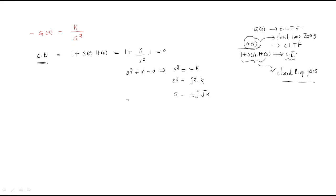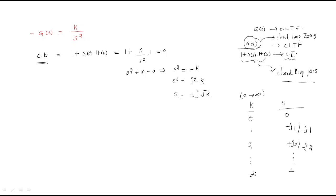Using these values we draw the root locus. K always varies from 0 to infinite. At K = 0, s = 0 (origin). At K = 1, we have points at +j1 and -j1 on the imaginary axis. At K = 2, points at +j2 and -j2. As K → ∞, the poles extend to +j∞ and -j∞.